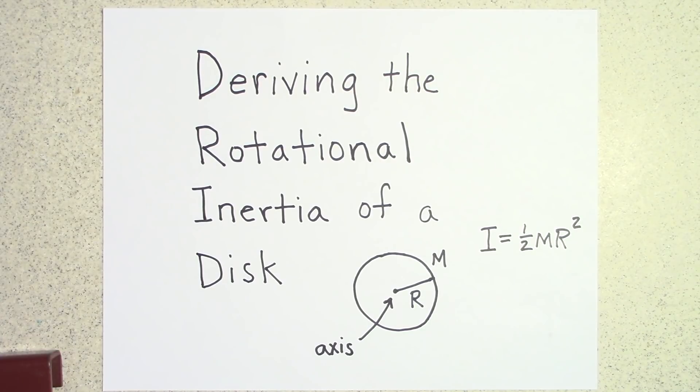Welcome. Today we'll be deriving the rotational inertia of a disc, and the disc is going to be of uniform mass density.